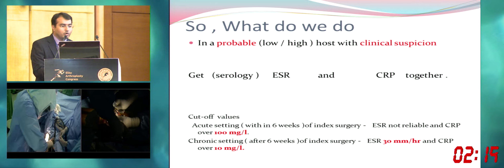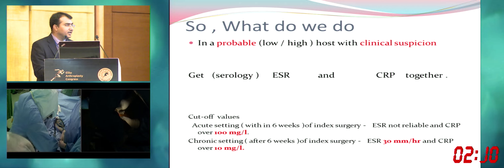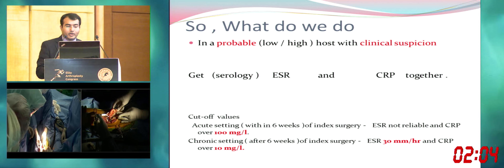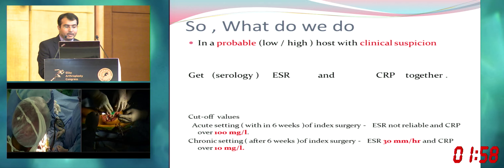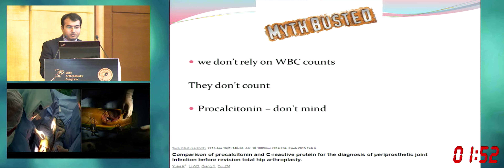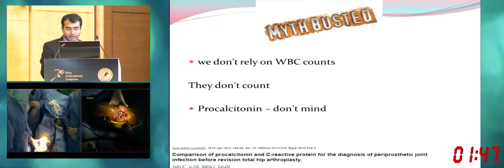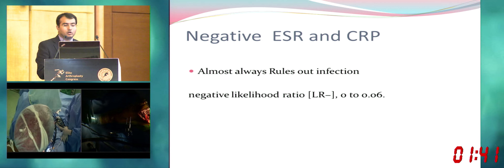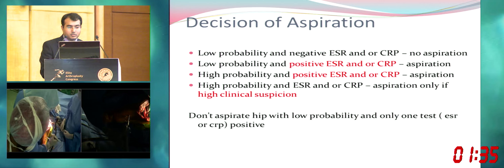When a patient comes with high or low probability and you have clinical suspicion, get the first test done — serology: ESR and CRP together. Not ESR alone, not only CRP — together they have good value. In an acute setting, don't rely on ESR, but CRP more than 100 is a good indication. In a chronic setting, ESR more than 30 and CRP more than 10 is suspicious. White cell counts don't really help; procalcitonin is as good as CRP. Negative ESR and CRP almost always rules out infection.